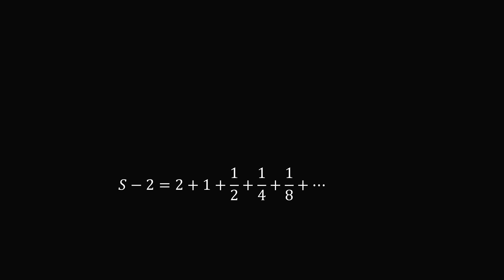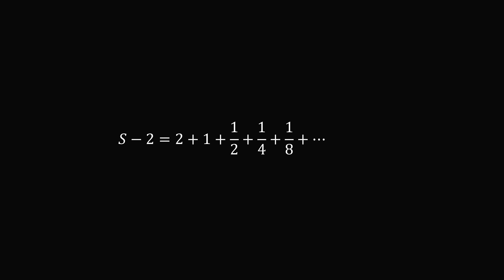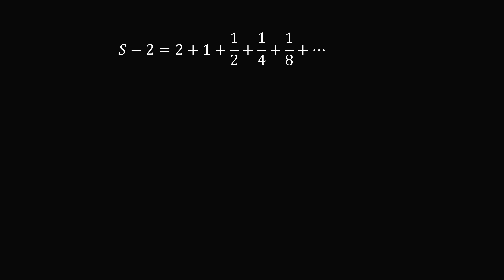And now we have something we can solve very easily. 1 plus 1/2 plus 1/4 plus 1/8 and so on is a standard geometric series with a common ratio of 1/2 and a first term of 1. So S minus 2 is equal to 2 plus 1 over (1 minus 1/2), and that equals 2 plus 2. This means S is equal to 6, and that's one way to solve the problem.